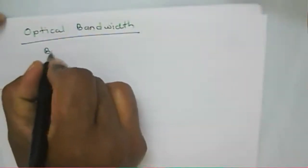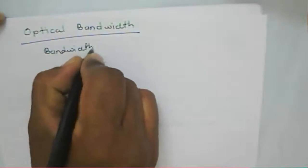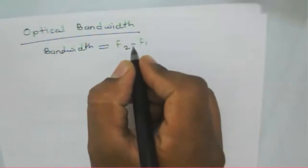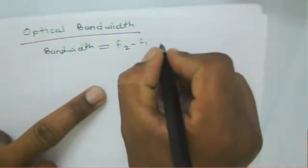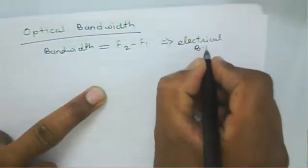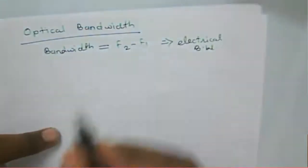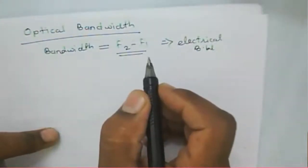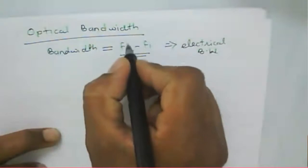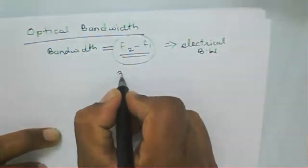Welcome to the optical communication course. We start here with optical bandwidth. Generally, bandwidth is a range of frequency, that is f2 minus f1. This is generally called electrical bandwidth — the range of frequencies we consider. We can also say it is about a 3dB bandwidth.